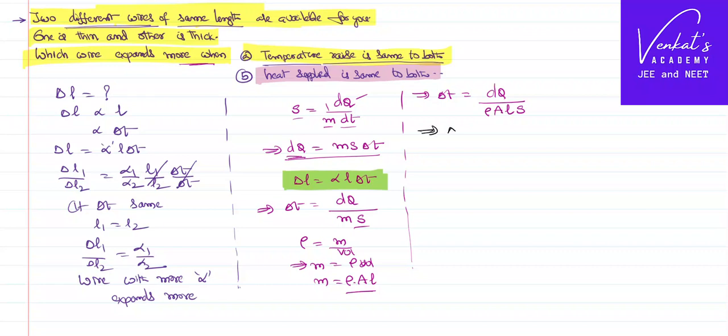Increase in the length is equal to, that implies we can find increase in the length is αL into ΔT. Now ΔT in the given format of dQ is dQ by density, area of cross section, length and specific heat. That is equal to increase in the length. There is L both in numerator and denominator that can be cancelled.